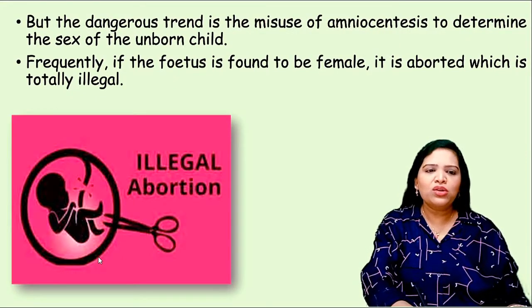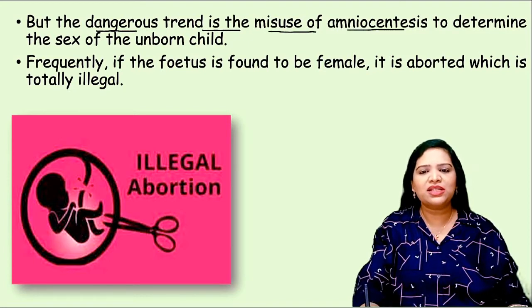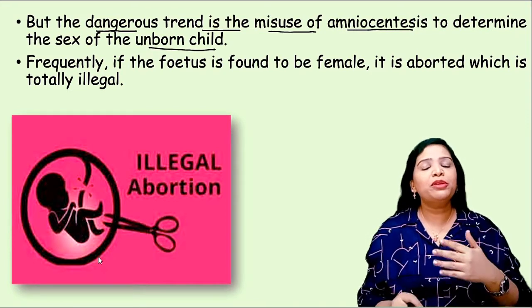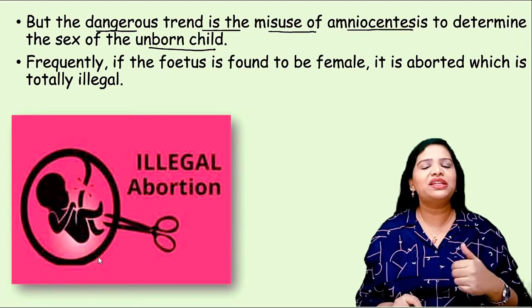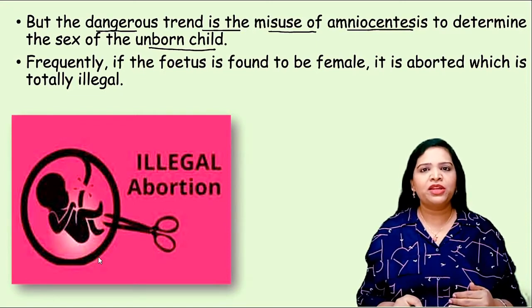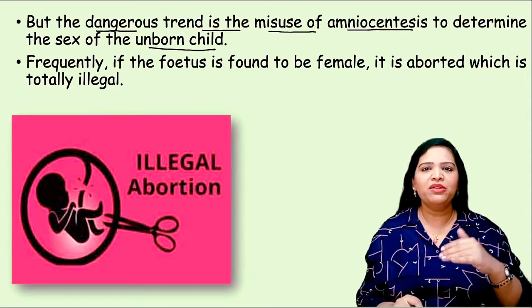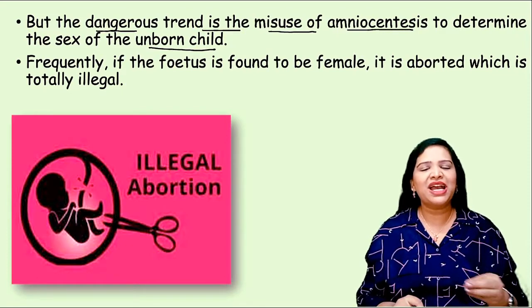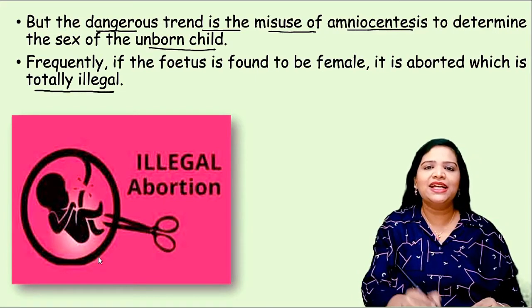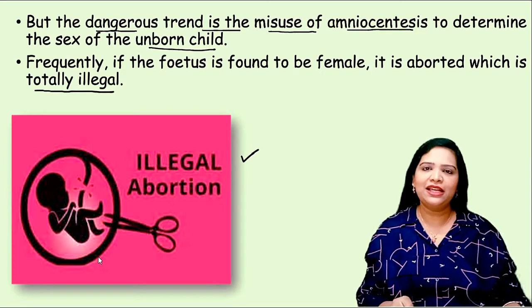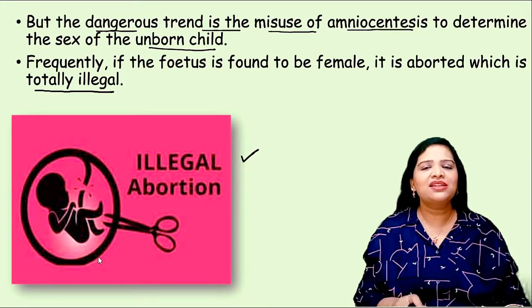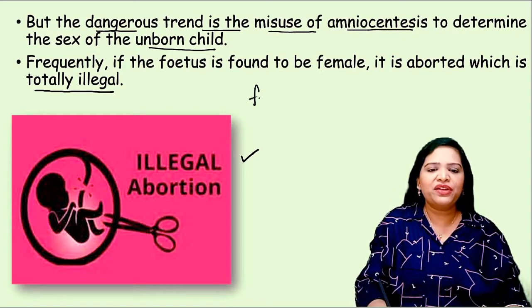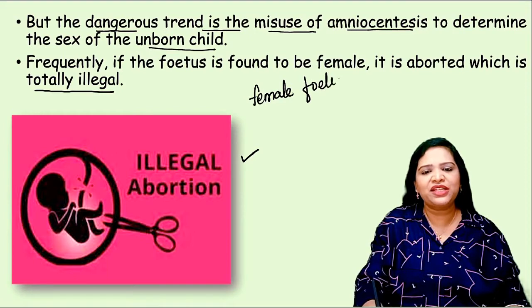But the most dangerous trend is the misuse of amniocentesis to determine the sex of the unborn child. People do scanning or amniocentesis, and if they see it is a female baby, they don't want a female child and ask the doctor to do abortion. Doing amniocentesis or scanning, finding the sex of the baby, and then doing MTP is totally illegal. This is called female feticide — feticide means killing the fetus.